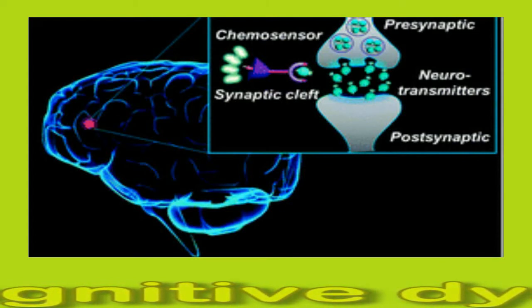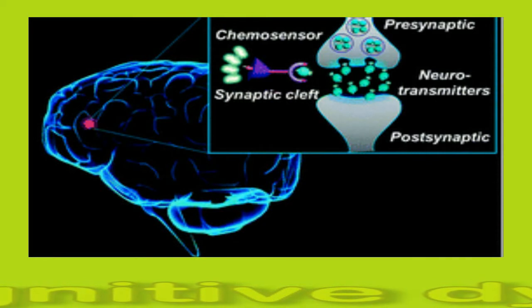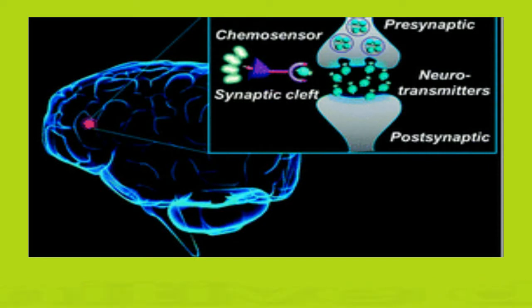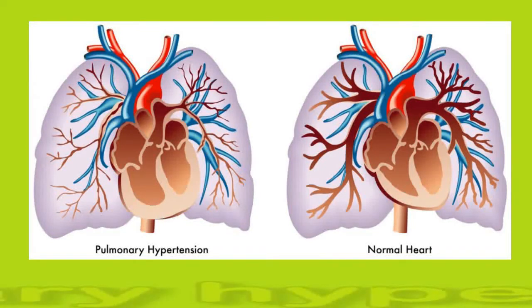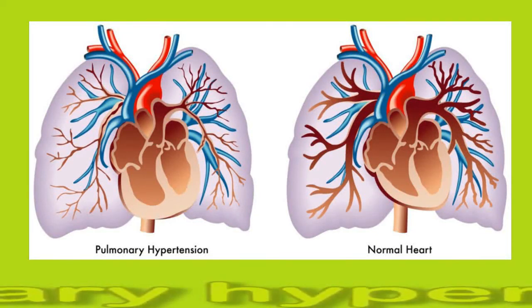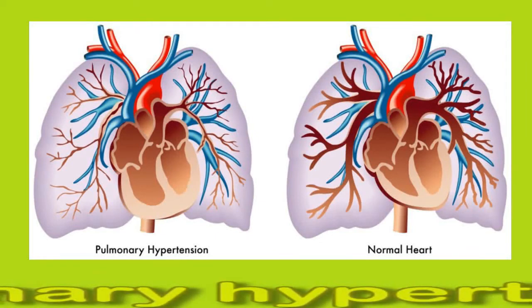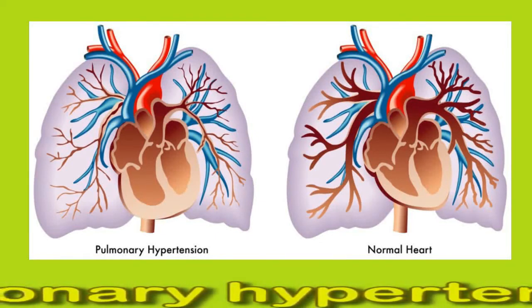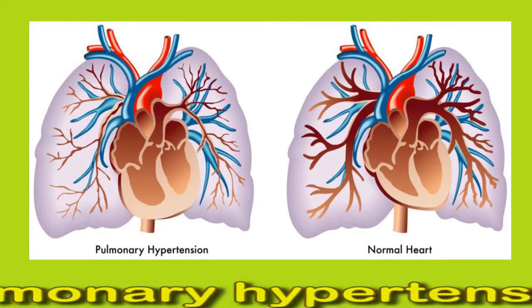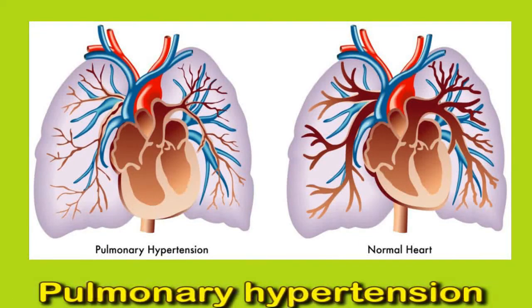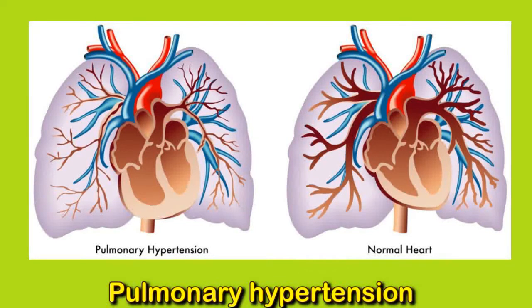Sufficient oxygen is essential for creating neurotransmitters and making sure they function correctly. Pulmonary hypertension: Typically, the right side of the heart pumps low-oxygen blood to the lungs. Once it reaches the lungs, blood can pick up oxygen from inhaled air. The oxygenated blood then returns to the left side of the heart, which pumps it throughout the body. A person with COPD can experience inflammation in the arteries that transfer blood from the right side of the heart to the lungs.